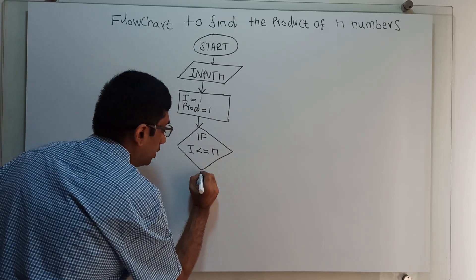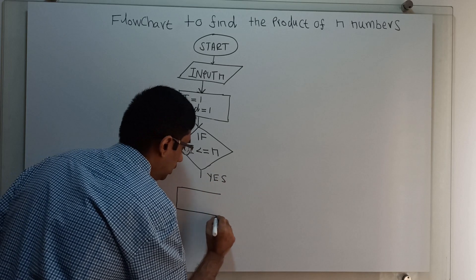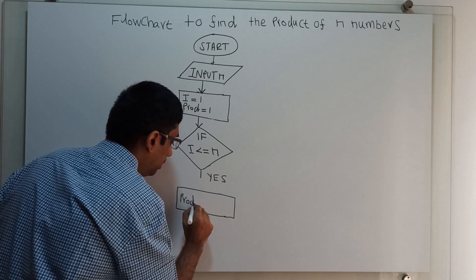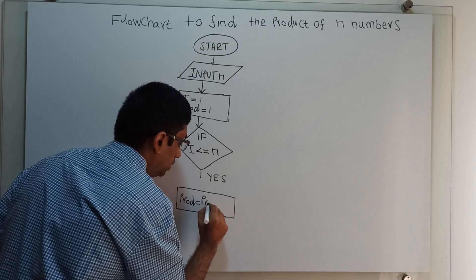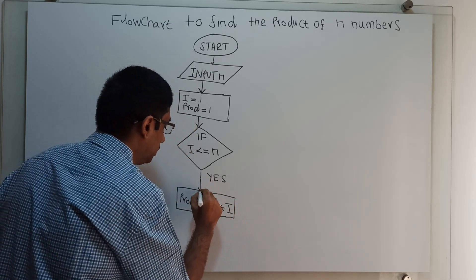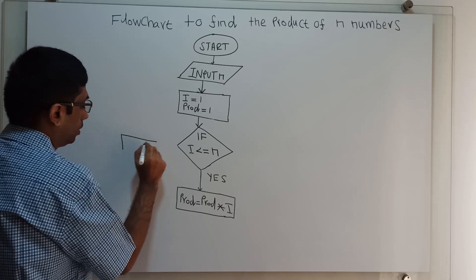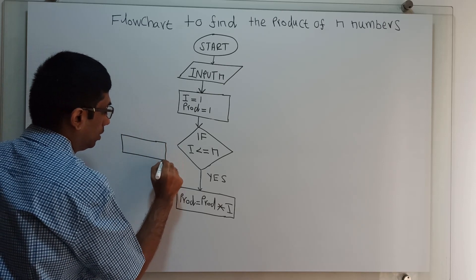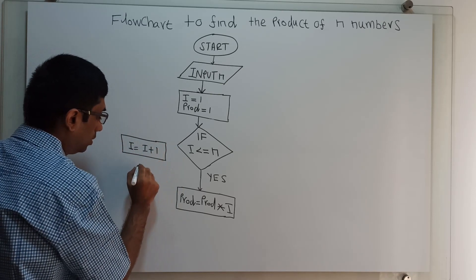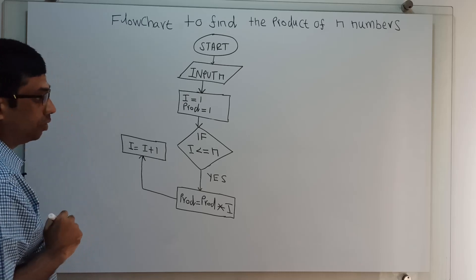If the condition is true, I am multiplying the variable: prod equal to prod into i. Next, I am incrementing i equal to i plus 1.